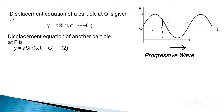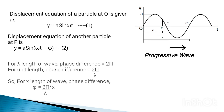The displacement equation at point P is given as y equals to a sin(omega t minus phi), where phi is the phase difference between particles at point P and O. We have taken the negative sign because the phase of point P lags behind point O by phase angle phi. Since the wave travels from left to right, point O is encountered first and point P is encountered later, resulting in point P's phase lagging behind point O by phase angle phi.